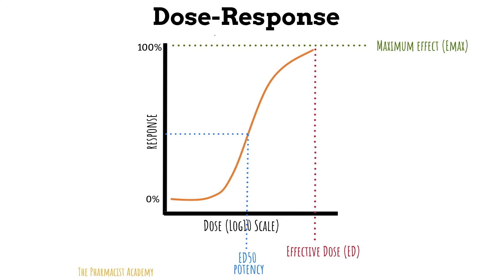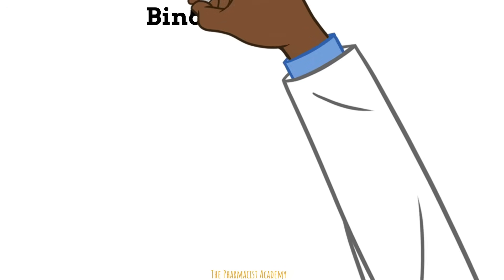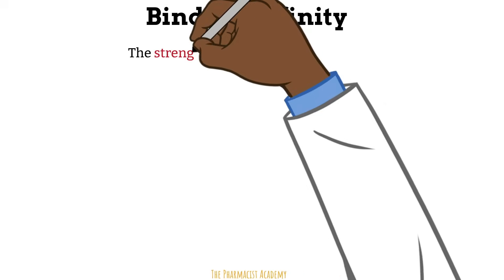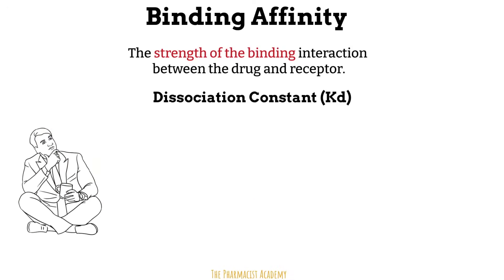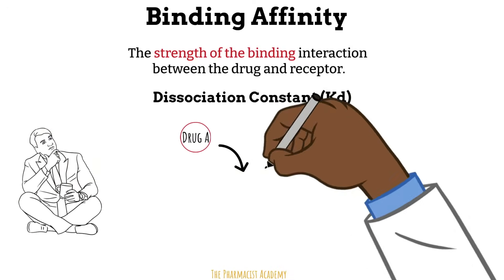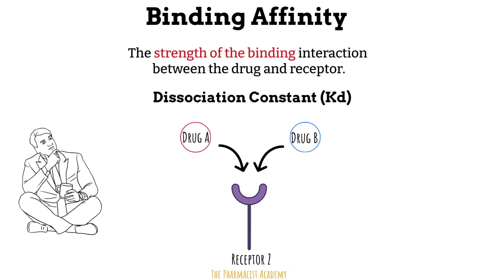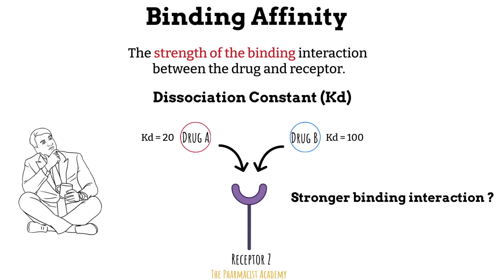There are other pharmacodynamic concepts that influence drug response. First, binding affinity — this is the strength of the binding interaction between the drug and receptor. We use the dissociation constant, KD, to evaluate the strength of the binding. For example: both drug A and drug B bind to receptor Z. The dissociation constant for drug A is 20, and for drug B it is 100. Which has a stronger binding interaction? The answer is drug A. The higher the dissociation constant, the weaker the binding interaction, and the easier it is for the drug to leave the receptor.